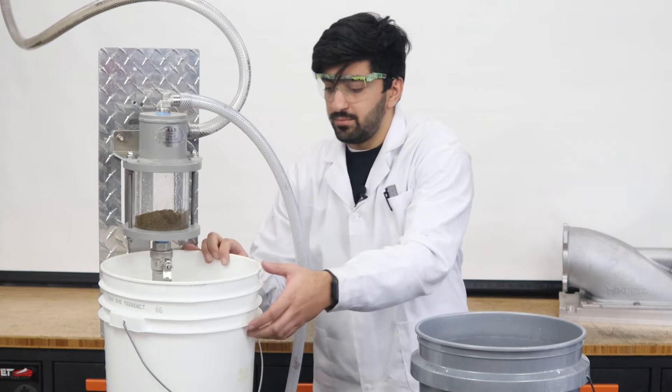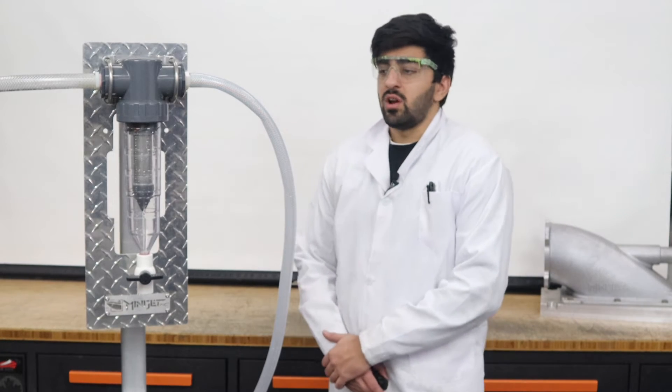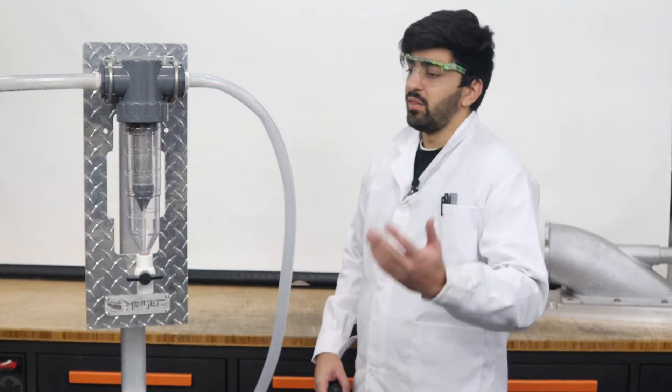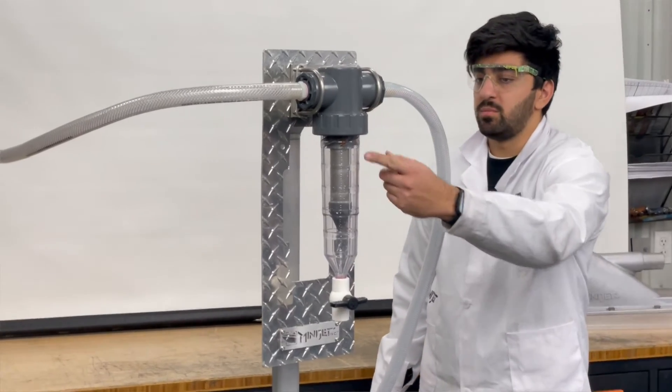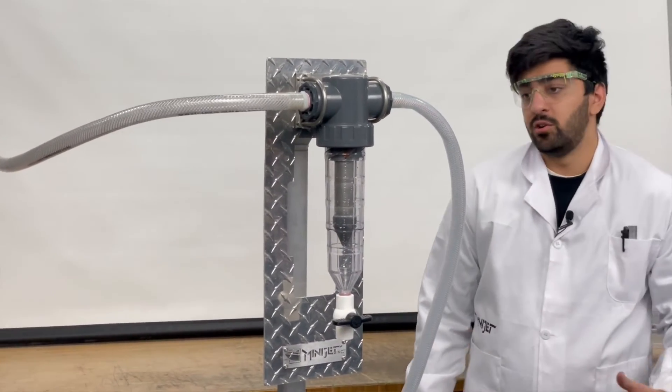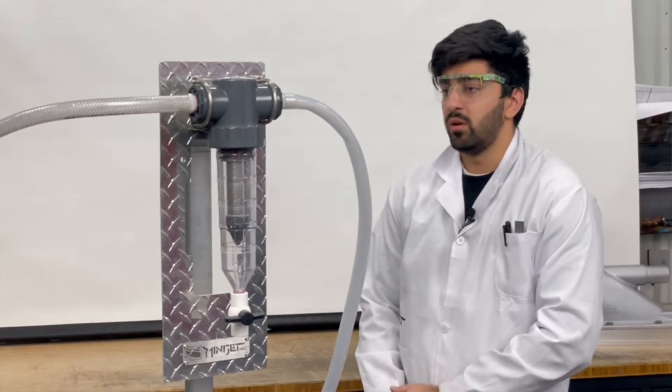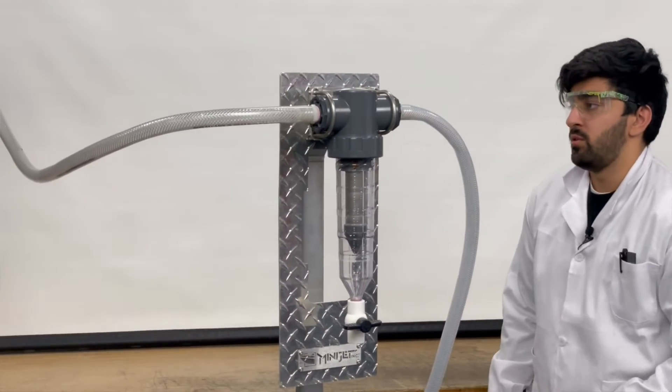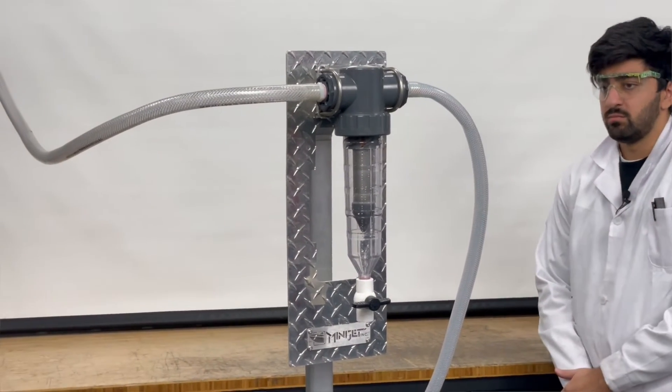All right, so we've got the Mini Jet sand trap mounted up in our testing rig. Unlike the other filters, we've got these guide vanes up here that'll hopefully make a nice cyclone for the water, and we've also got a filter element to filter out that lighter debris that we saw a lot of coming through in our previous tests. So without further ado, let's get this test underway and get some dirty water flowing.